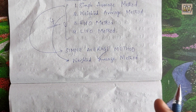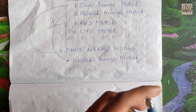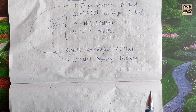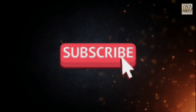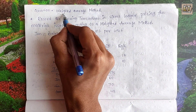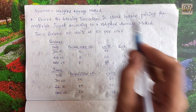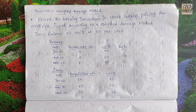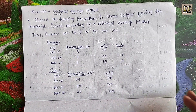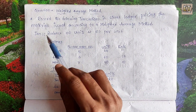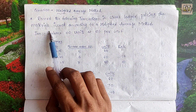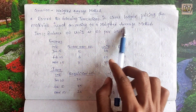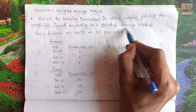We will try the illustration. First of all, we will choose questions. This is the question — this is the Weighted Average Method from the 2nd chapter, 2nd unit. We will discuss the materials in the unit. The question is: record the following transactions in stores ledger, pricing the materials issued according to the Weighted Average Method.